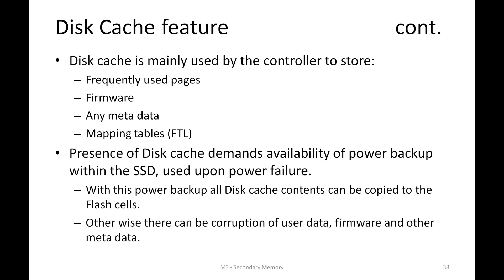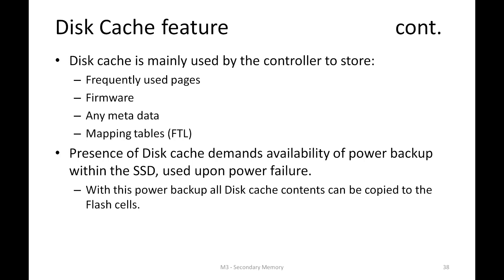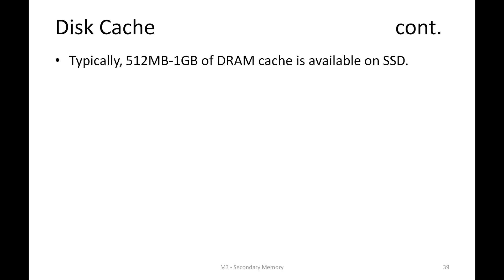If we do not provide such power backup, the moment there is a power loss, because the disk cache memory — either SRAM or DRAM — is volatile, it will lose all data and can result in corrupted user data, firmware, or metadata. Typically we would see around 1 GB of DRAM cache in current SSDs.